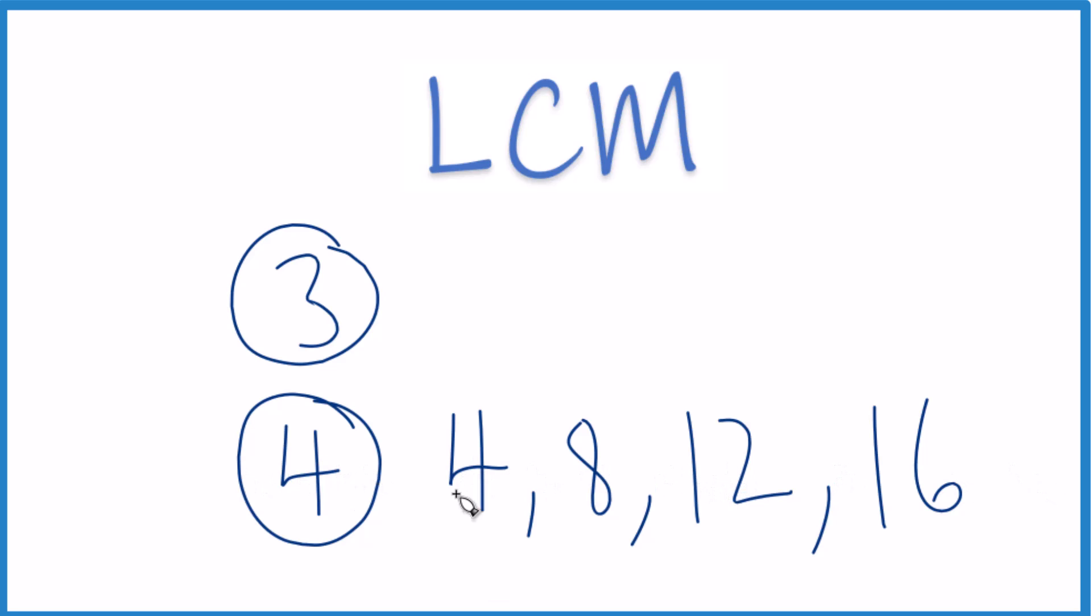So these are the multiples, and we did it by adding the numbers together. You could have also said 1 times 4 is 4, 2 times 4 is 8, 3 times 4 is 12, and so on. Either way works. We find the multiples of 3 and 4 that way.